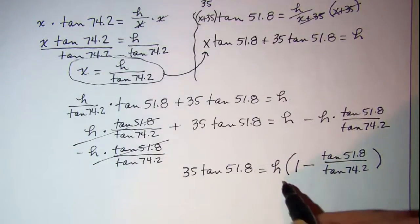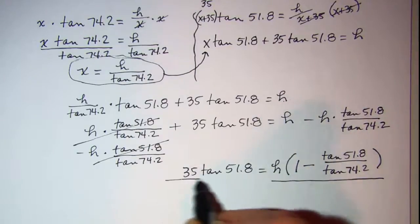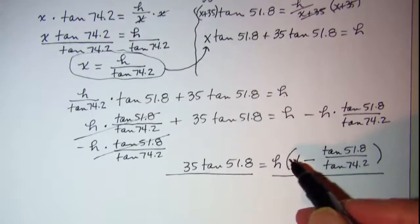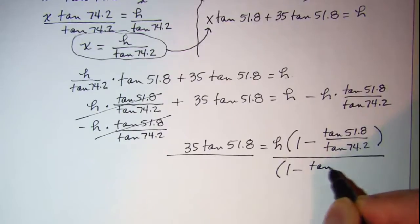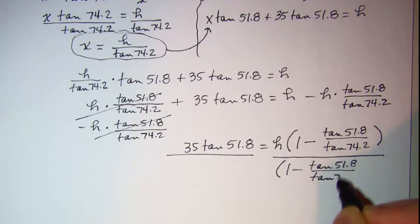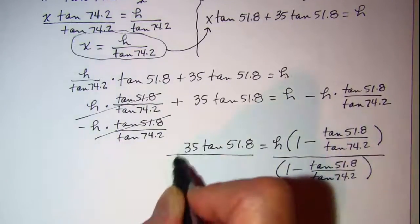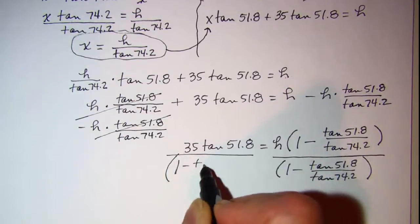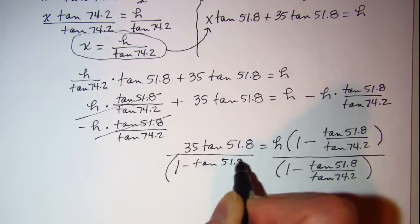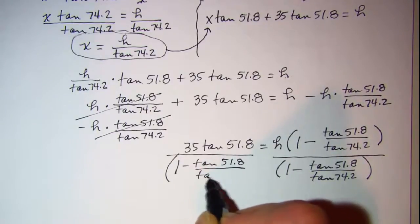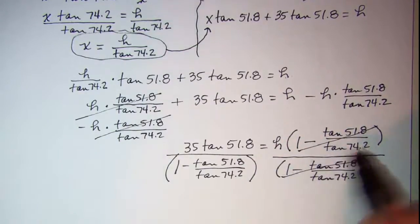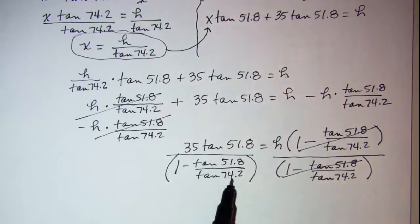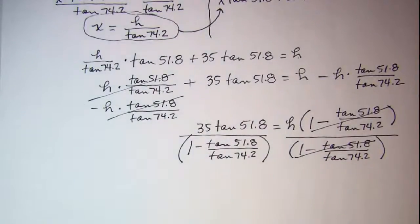And now to solve for H, I'm going to divide both sides by this coefficient of H: 1 minus tangent 51.8 over tangent 74.2. So these cancel, and then I have all numbers here, so I can do this on my calculator and get a value for H.